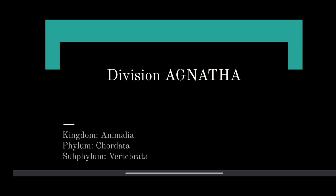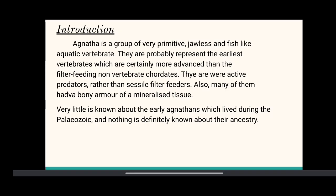Division Agnatha, Kingdom Animalia. Agnatha is a group of very primitive jawless and fish-like aquatic vertebrates. They probably represent the earliest vertebrates, which are certainly more advanced than the filter-feeding non-vertebrate chordates. They are proactive predators rather than social filter-feeders. Also, many of them have a bony armor of a mineralized tissue. Very little is known about the earliest Agnathans which lived during the Paleozoic, and nothing is definitely known about their ancestry.